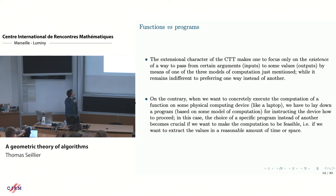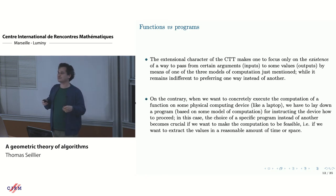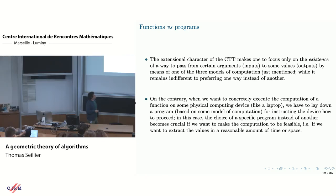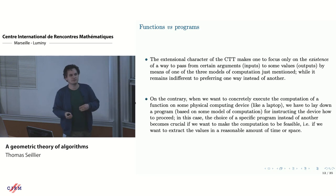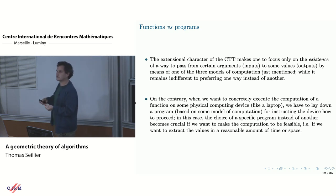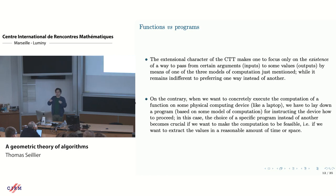The Church-Turing thesis is about functions, but we care about algorithms. If you have a Turing machine that computes a given function, you can compute the same function in lambda calculus, but the dynamics — the steps in the computation — won't be the same. You just know that in the end you compute the same function: give it an input, and the two different implementations will give you the same output.